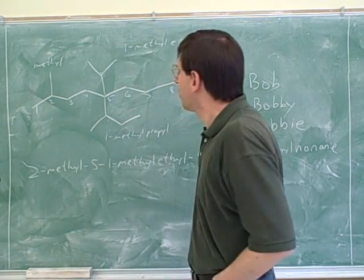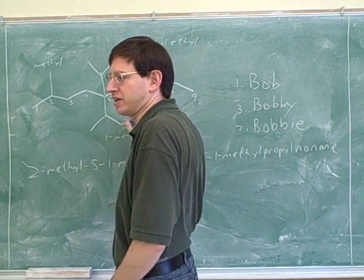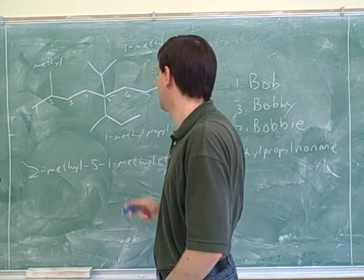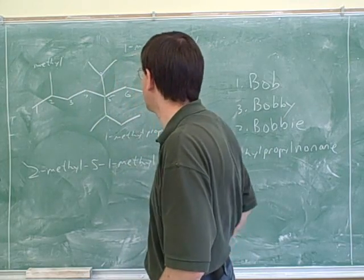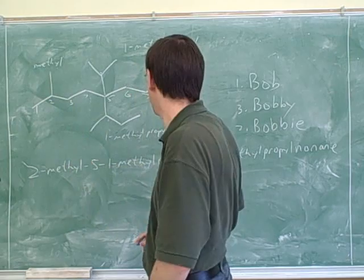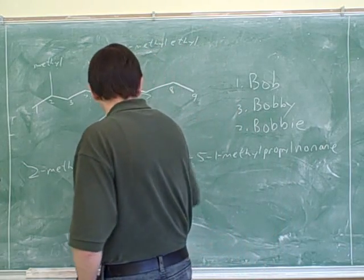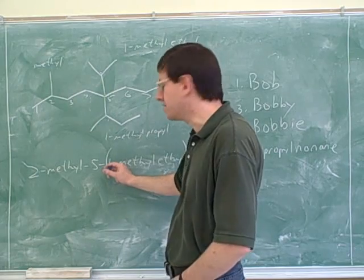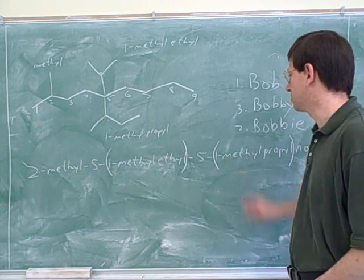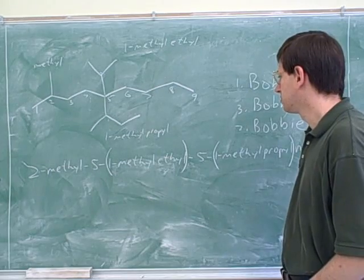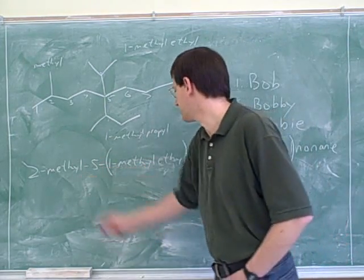I just want to make sure you thought about one issue — you can't assume the longest chain is horizontal. One thing we had to check was whether we could get a longer chain going down. That's actually one of the favorite traps on exams. In this case you were right, the longest chain really is just horizontal. We should start numbering from the left because that puts the first substituent on carbon two, whereas starting from the right wouldn't reach a substituent until carbon five. This number refers to a location inside the substituent, so it's good you put it in parentheses. Methyl comes before methylethyl alphabetically, and methylethyl comes before methylpropyl, because methyl ends first and then E beats P.